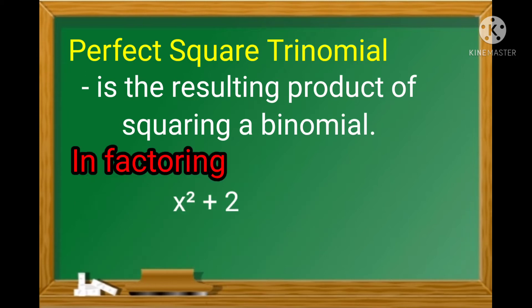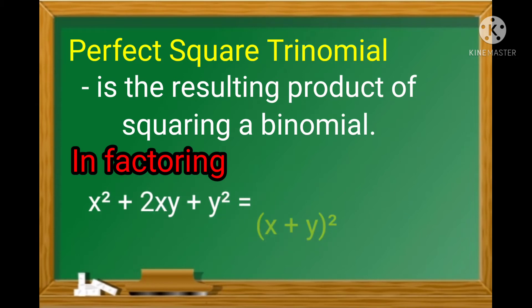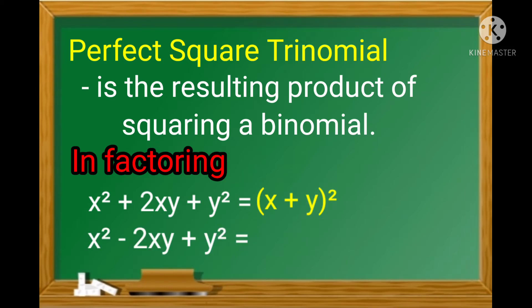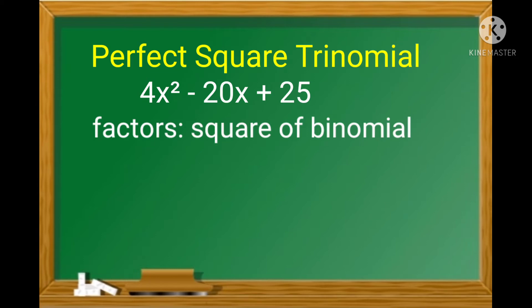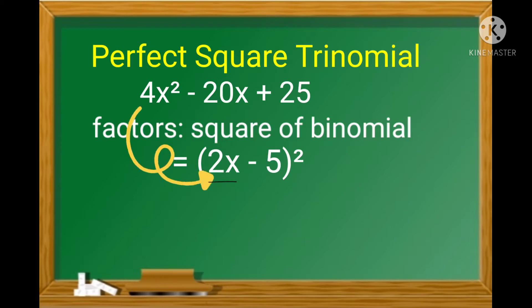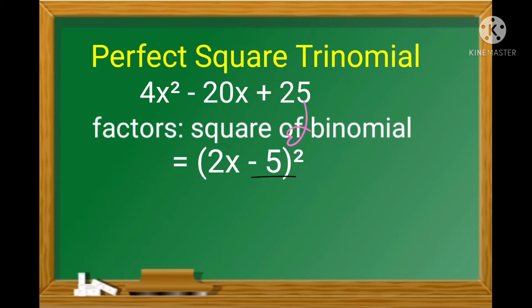In factoring x² + 2xy + y², the factors are (x + y)², and x² − 2xy + y² factors as (x − y)². This suggests that in factoring a perfect square trinomial, the result is the square of a binomial. The first term of the binomial is the square root of the first term of the trinomial, and the second term is the square root of the third term.